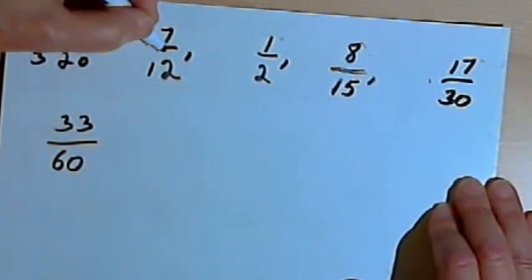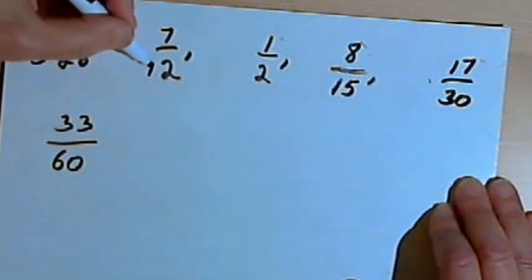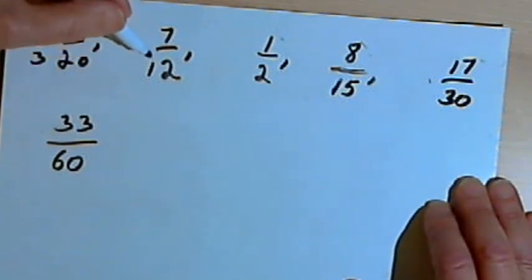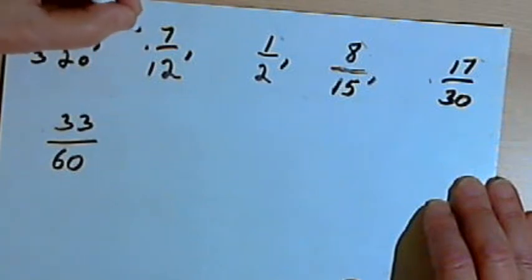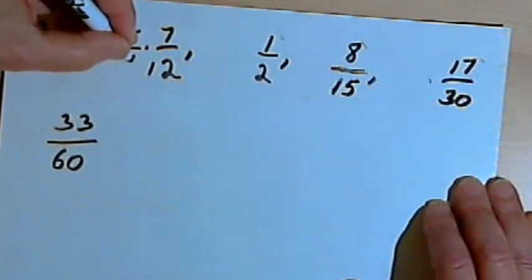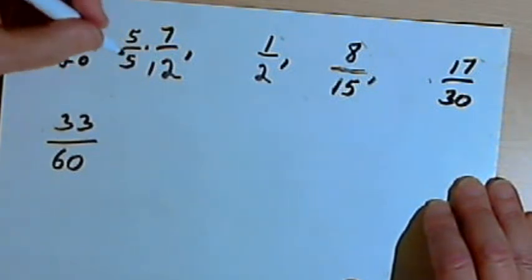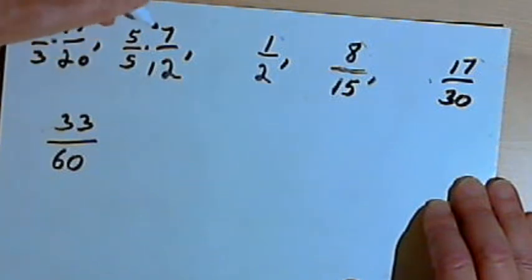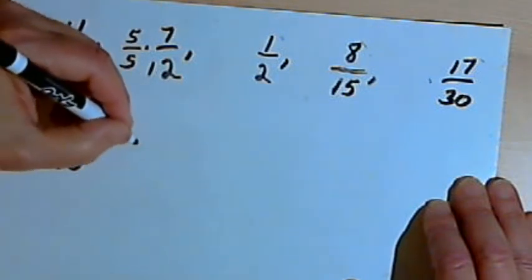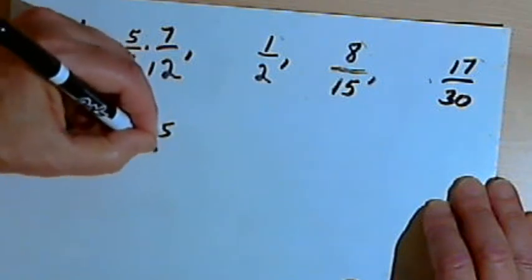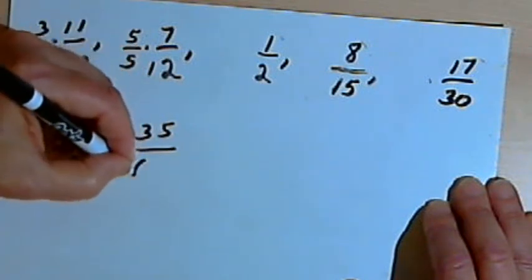I go on to 7 over 12. Well, I would have to multiply 12 by 5 to turn it into 60. So I'll multiply the whole fraction by 5 over 5, which once again just equals 1. So 5 times 7 is 35, and 5 times 12 is 60.